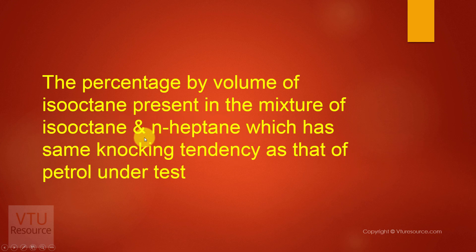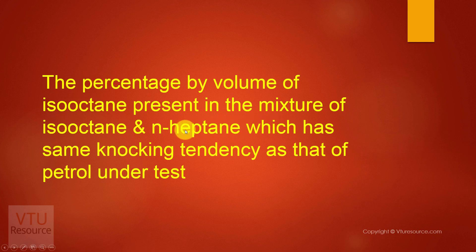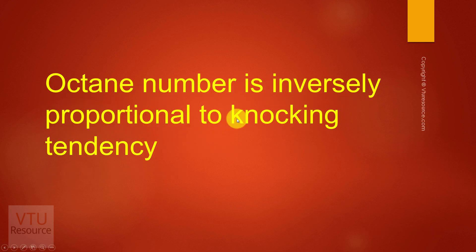n-Heptane is a straight chain hydrocarbon. Since petrol may contain C5, C6, or C7 hydrocarbons, we took n-heptane as a representative straight chain hydrocarbon and used it as a fuel in an IC engine. The knocking tendency of n-heptane was found to be very high, so the octane number of n-heptane is fixed as zero. Therefore, octane number is inversely proportional to knocking: higher octane number means less knocking, and lower octane number means more knocking.